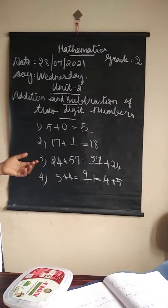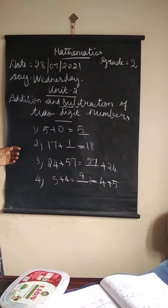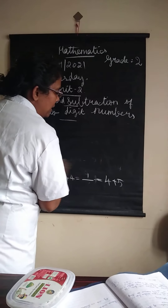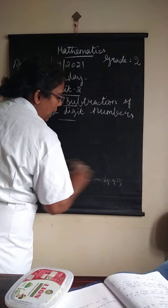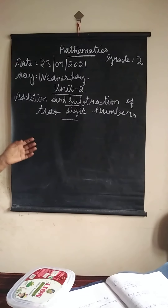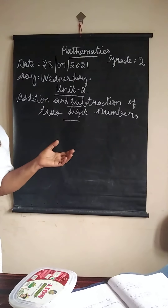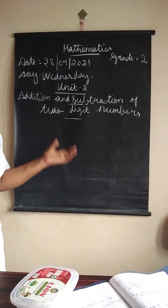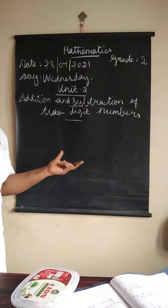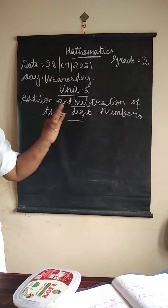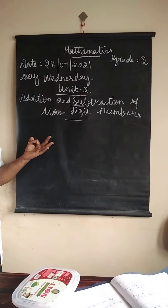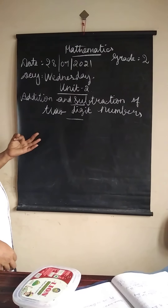Complete the table. Do you have any doubt in complete the table? In complete the table, we should add the number from 0 to 10. We have to add it. Next one, letter 3: Add the following.